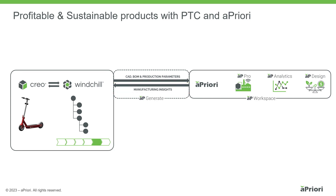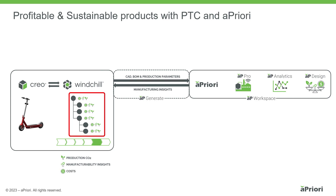Some of this information is sent back to Windchill to augment the bill of material, like costs, CO2 or manufacturability scores. Windchill's product definition is now enhanced with information critical for decision-making, especially when used as gate criteria during new product development.